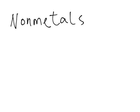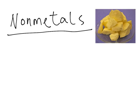Now we're going to talk about the non-metals. Non-metals are the opposite of metals — they have low boiling points and low melting points, and they have different characteristics. This is usually how a non-metal looks. This is sulfur.